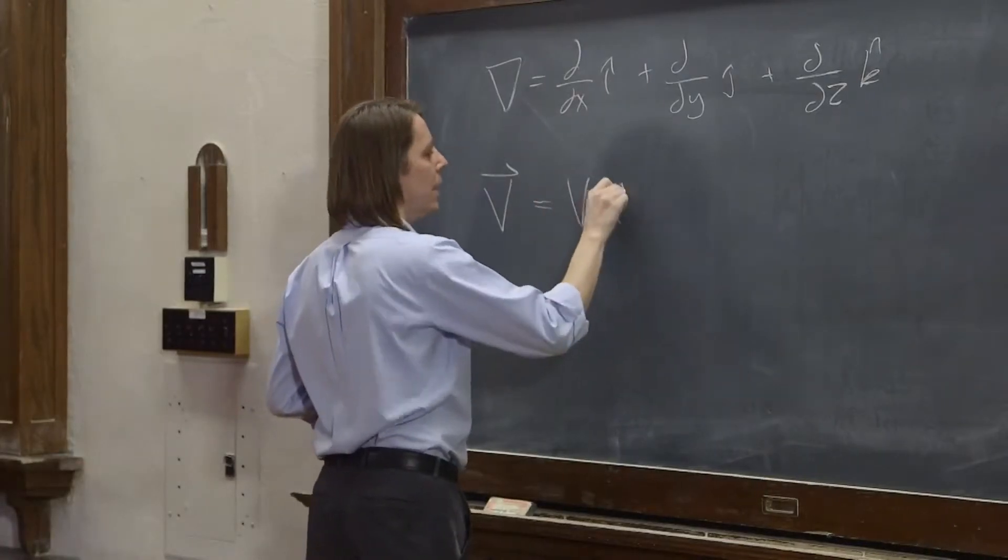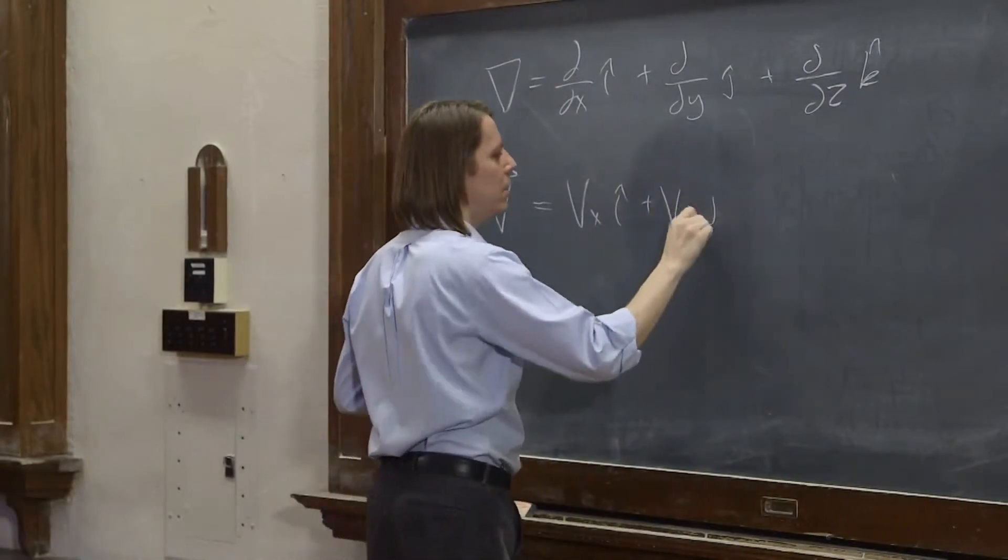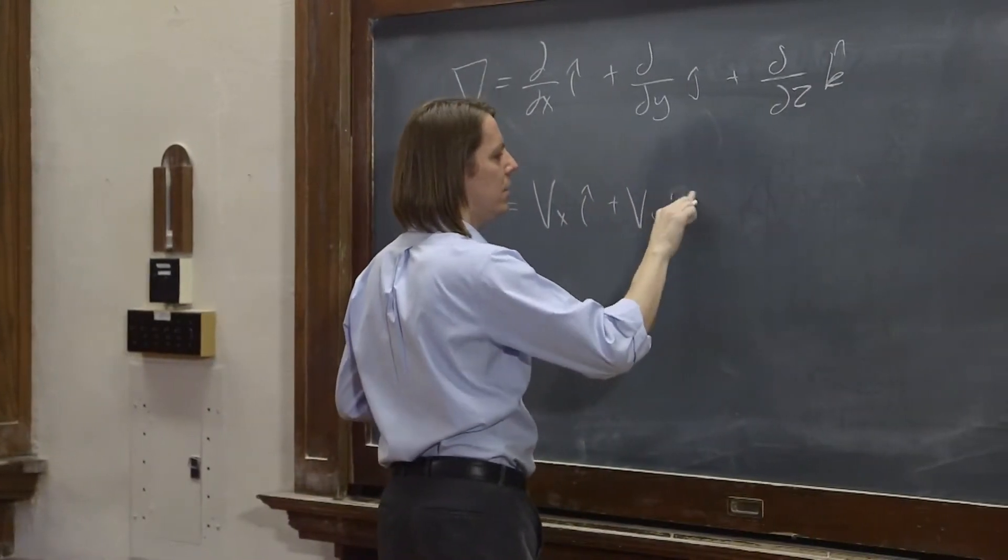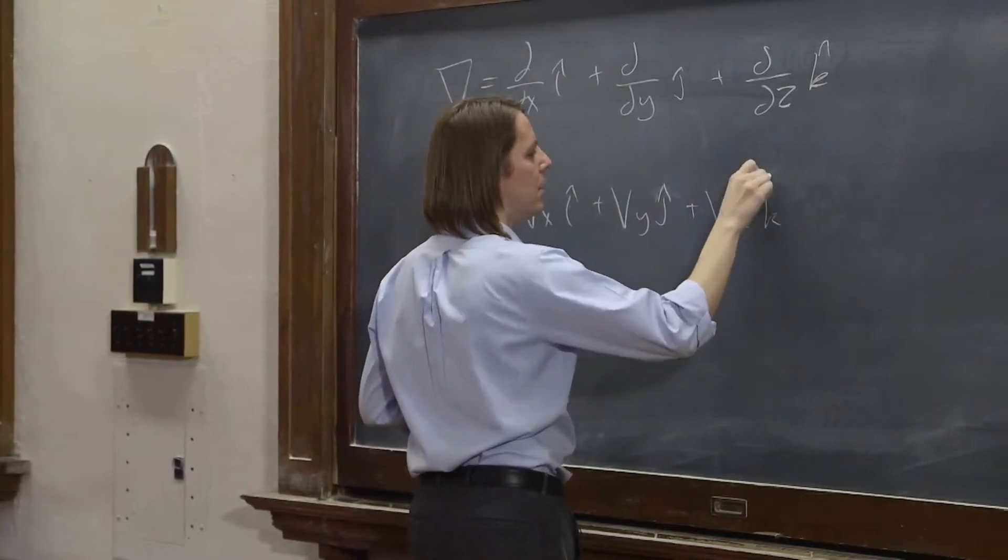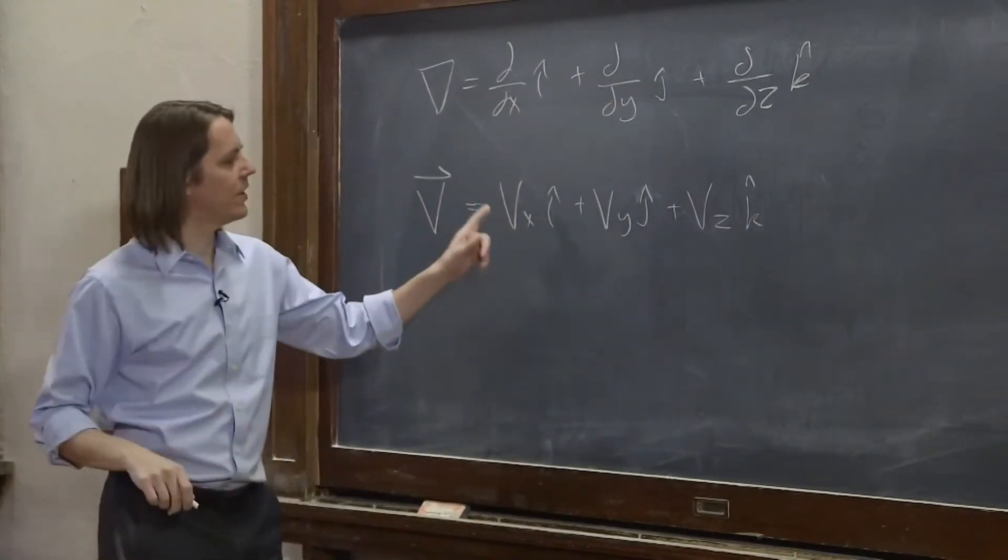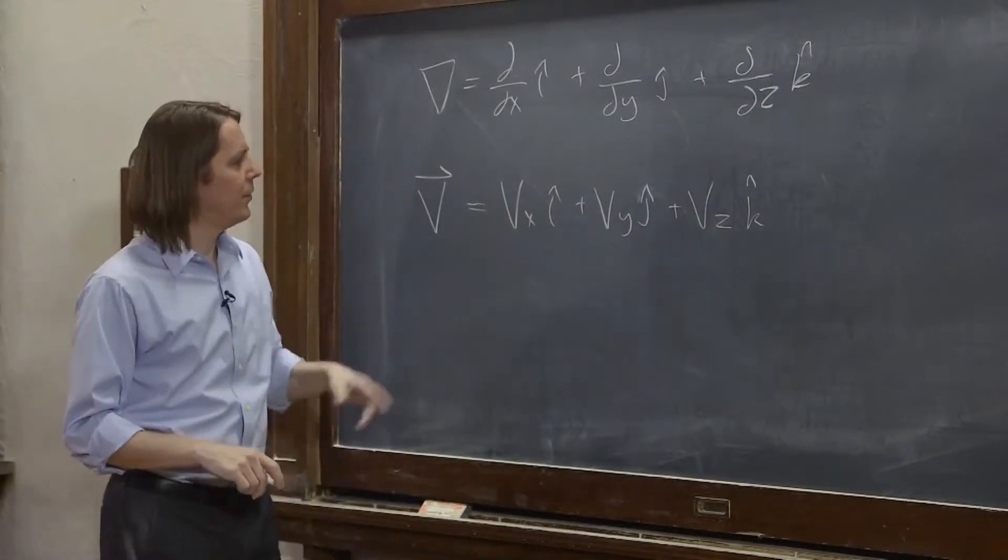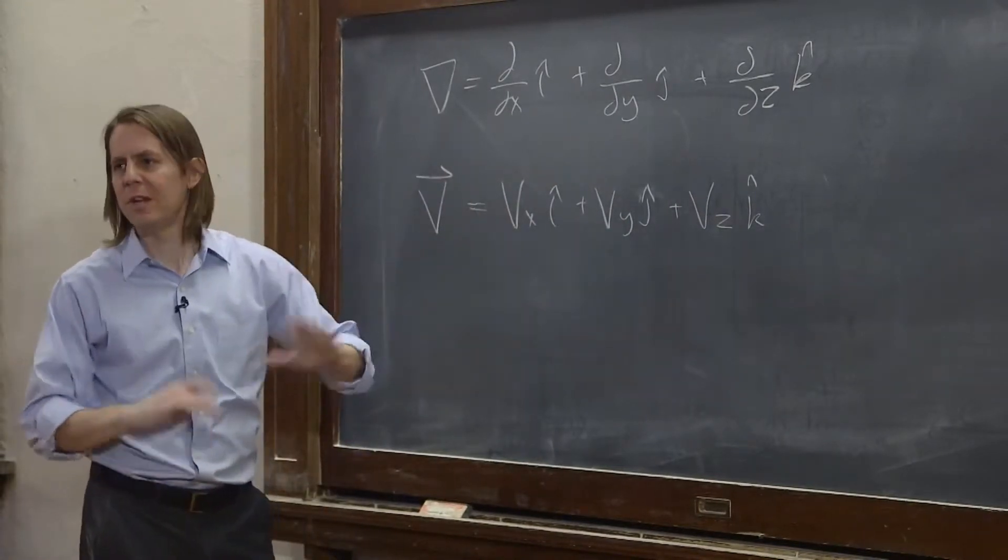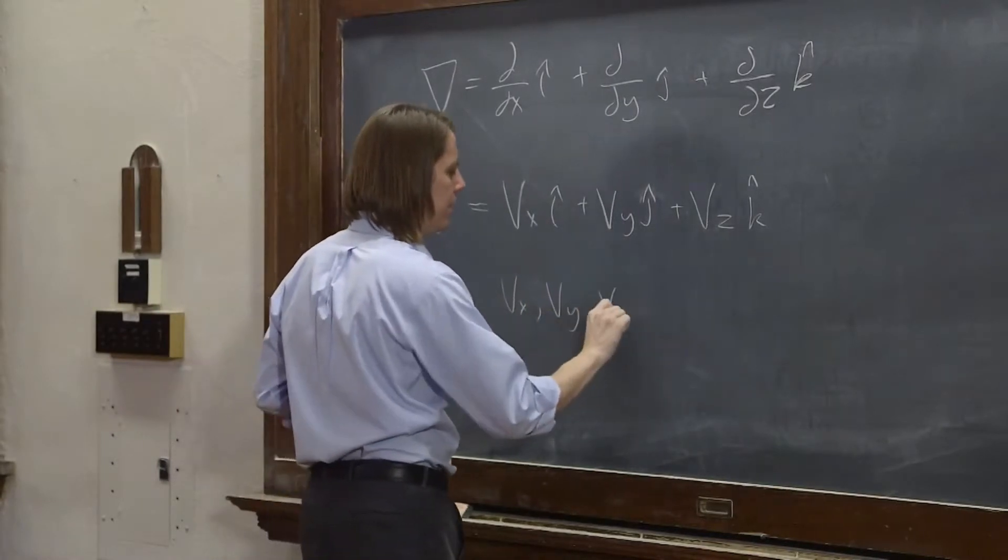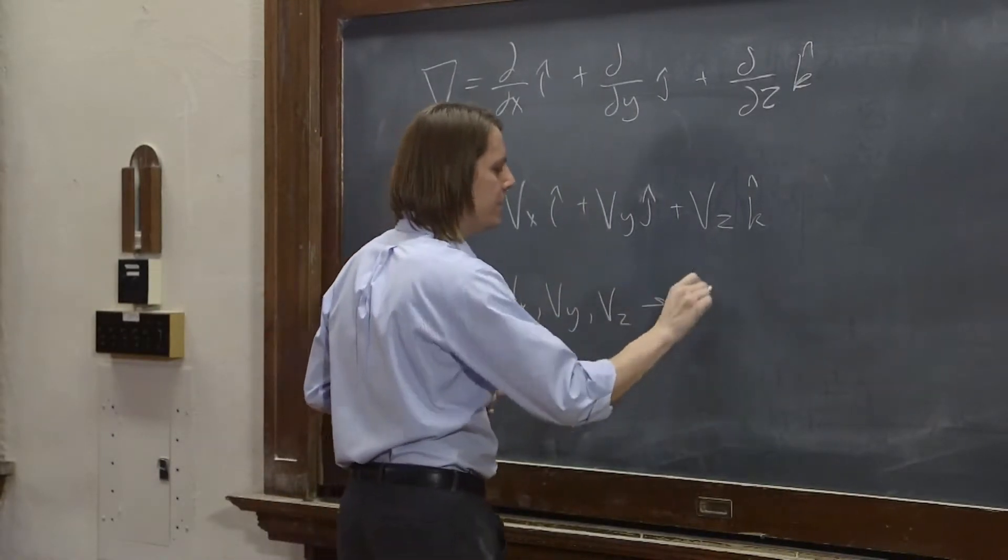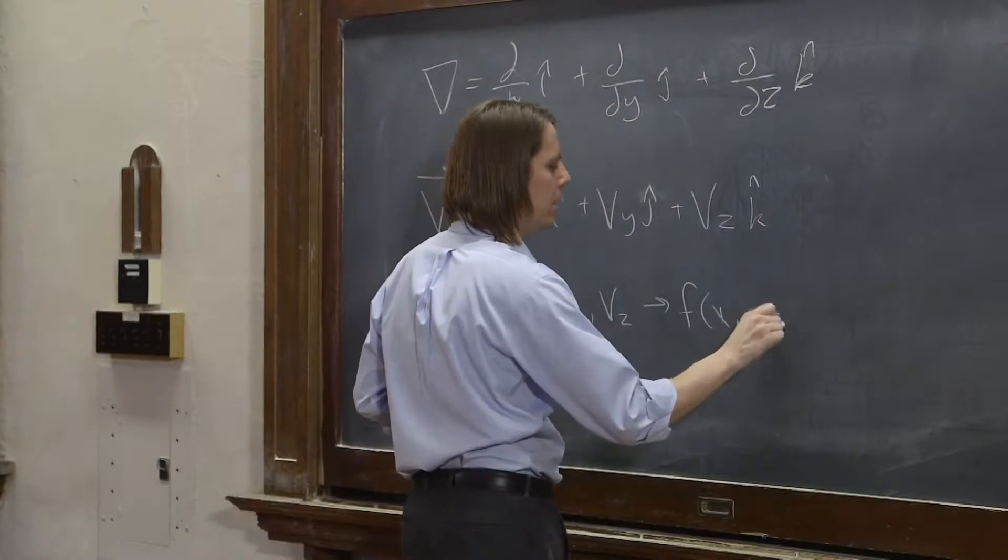If you're going to write one really general, you write it like this: Vx i-hat plus Vy j-hat plus Vz k-hat. And these are not constants. Vx, Vy, Vz aren't constants. They're not even just functions of x, y, and z. They're any function. So Vx, Vy, Vz are some function of x, y, and z.